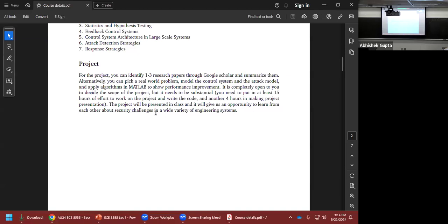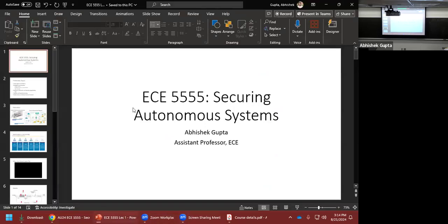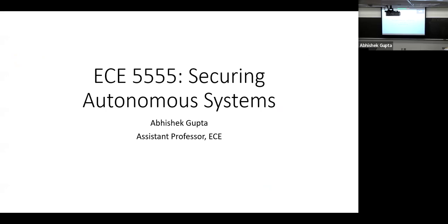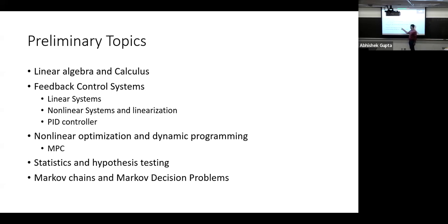So this is broadly the course outline. We'll start with linear algebra and calculus, then feedback control systems — a review of ECE 3551 — then nonlinear optimization and dynamic programming, particularly model predictive control for complex systems. Then statistics and hypothesis testing. Once we've covered all these prerequisites — about a month and a half to two months — we'll be ready to talk about cyber attack detection and cyber attack response.